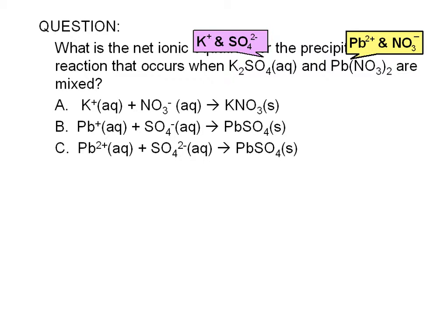Therefore, we do not expect our precipitate to have potassium or nitrate ions. Therefore, choice A is incorrect. Potassium nitrate is soluble in water. It will not be a precipitate.